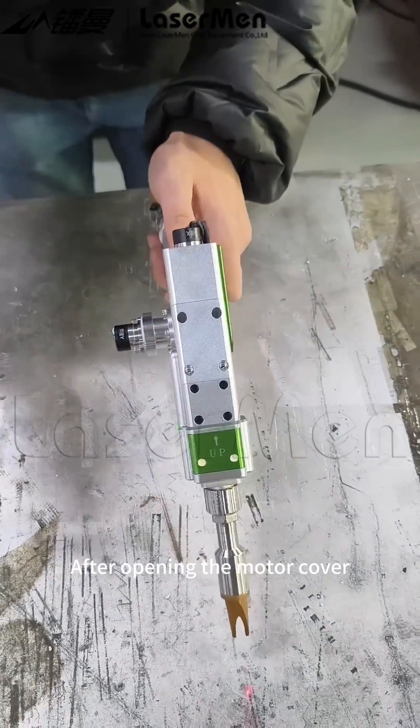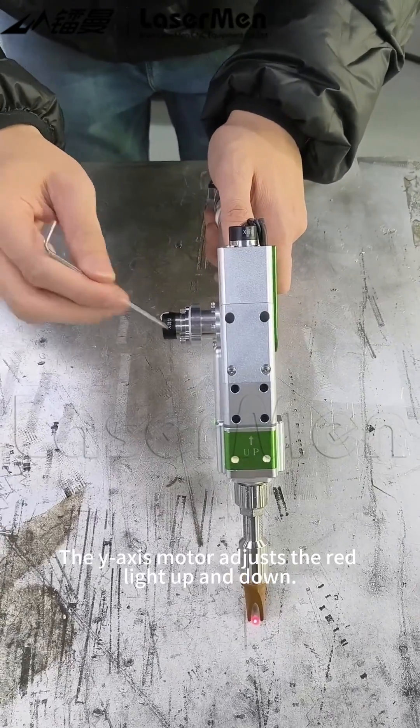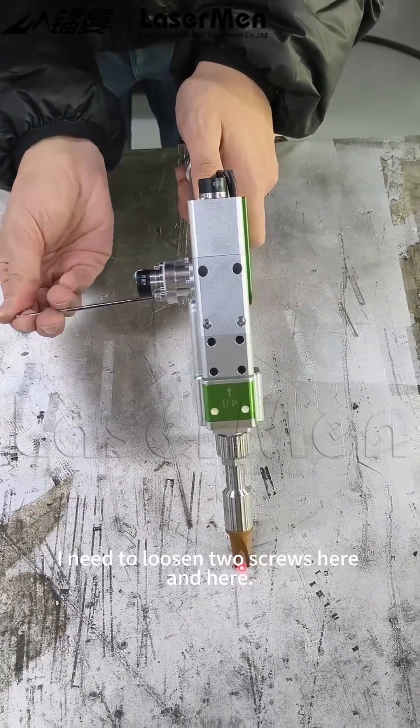After opening the motor cover, we can see that this is the Y-axis. The Y-axis motor adjusts the red light up and down. If I want to adjust the red light up and down, I need to loosen two screws here and here.